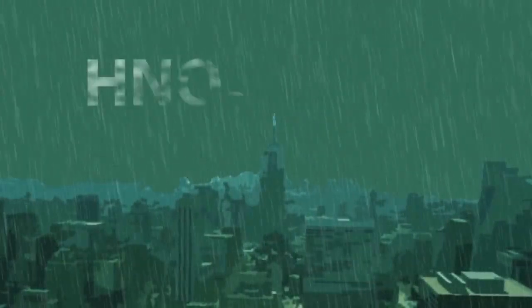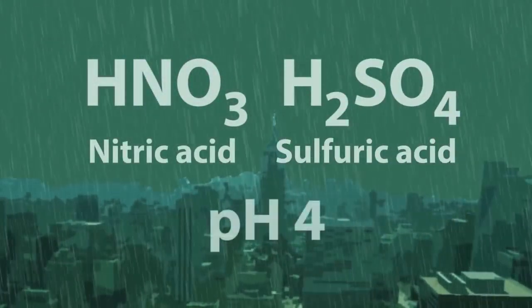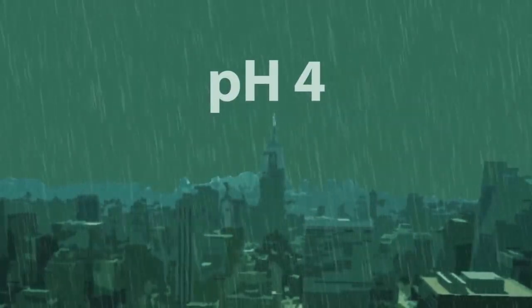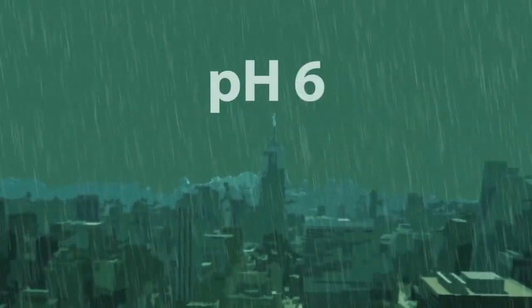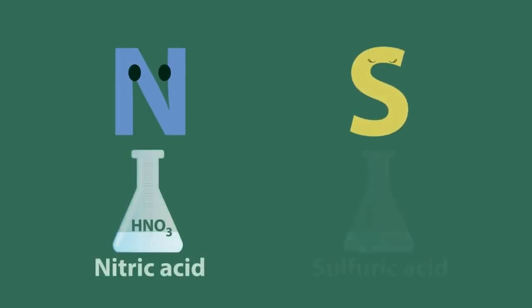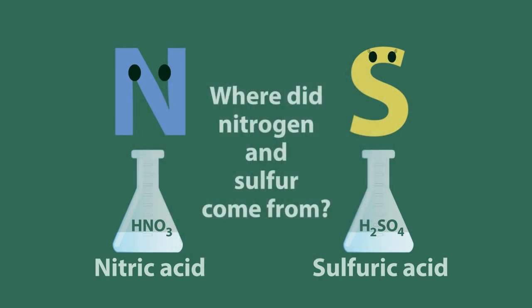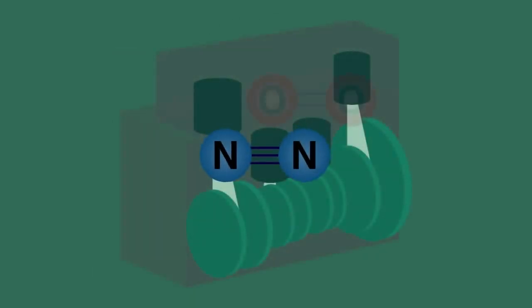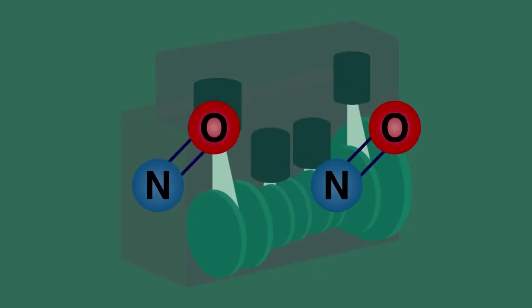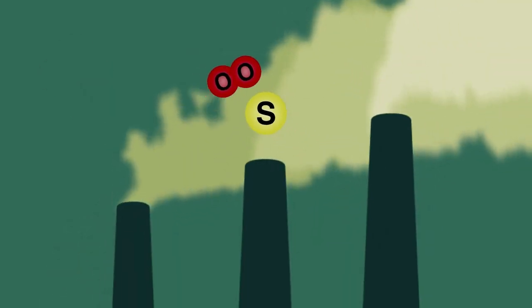Acid rain is a very dilute solution of nitric and sulfuric acids with a pH of around 4. Now we will learn about ways in which we can either make this acid rain less acidic or at the very least reduce its negative effects on our environment. The nitrogen in nitric acid came from the combination of atmospheric nitrogen and oxygen in the cylinders of motor vehicles, and the sulfur came from fossil fuels containing sulfur, particularly burnt in our power stations.